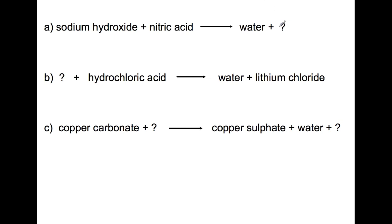So in the first example we're filling in the salt. So we'll do what we did before. So we're going to take the sodium from the base and we're going to change the nitric acid. So we would get sodium nitrate as our salt. In the second example we've been given hydrochloric acid. We're producing water and we're producing lithium chloride. So we're trying to write the name of the base. So we're only producing two products here, water and lithium chloride, so we know that we don't have a carbonate.